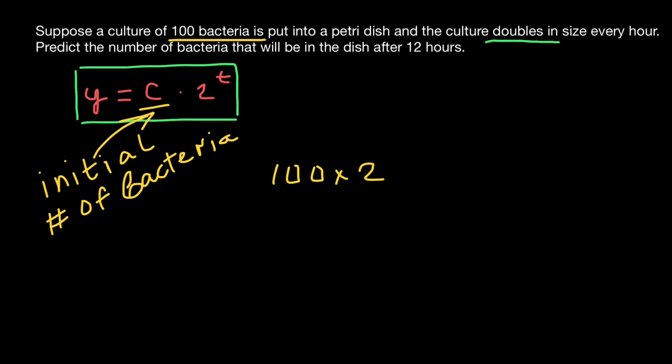If our problem told us that it would increase three times or five times during one hour, we would put three or five here. But because we are told that it is going to double, we put two here. And t stands for the number of doubling cycles, and we have 12 such cycles, so two to the power of 12.